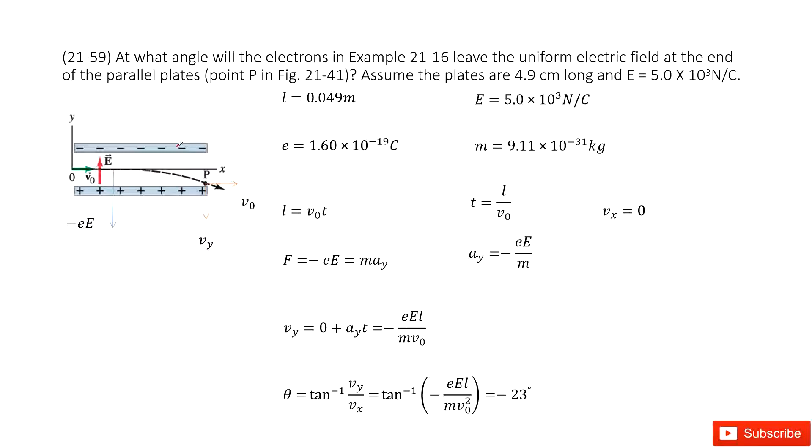In example 16 we have the uniform electric field at the end of the parallel plane. The electric charge is put under there and it'll do the motion and finally move out this way. This is like projectile motion we learned in chapter 3.